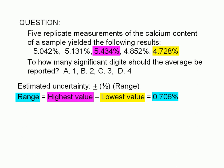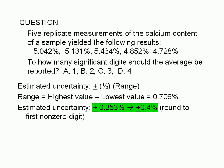Half of 0.706 is 0.353%. It is customary to round off uncertainties to the first non-zero digit. 0.353% rounds up to 0.4%. So our estimated uncertainty is plus or minus 0.4%.